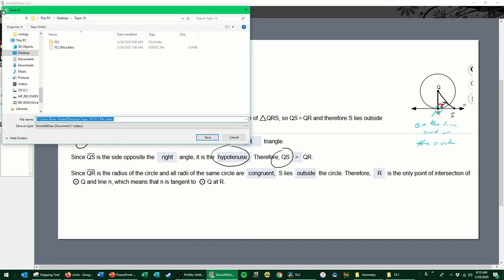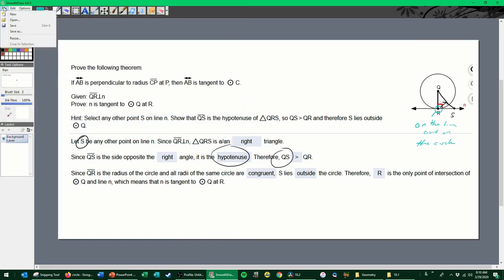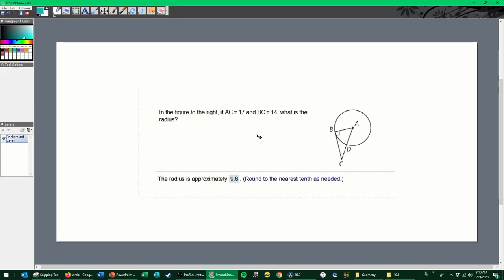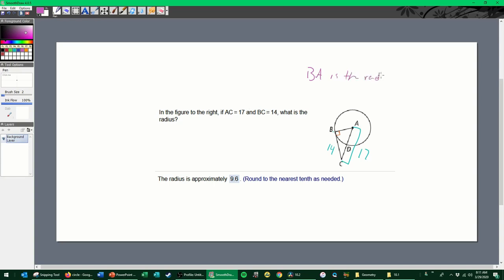In the figure to the right, if AC is 17 and BC is 14, what is the radius? They were very generous to us on this question because BA is the radius. They were nice enough to show us we have a right triangle, so point B is the point of tangency. All we need to do is the Pythagorean theorem where 17 is C. So I'm going to have 14² + B² = 17².